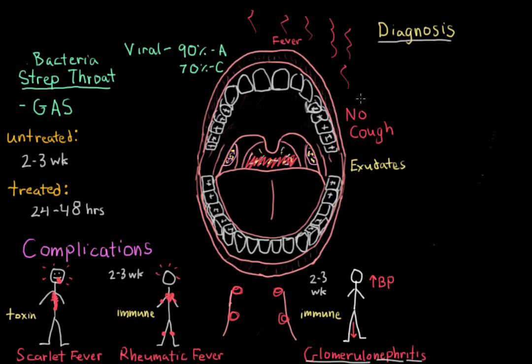So a combination of a fever, no cough, very sore throat, maybe these exudates, and tender and enlarged neck lymph nodes may suggest strep throat. But to confirm a suspected strep throat, a clinician should do two things.